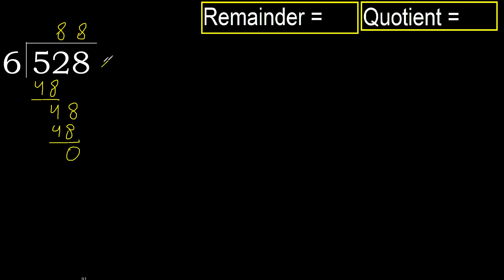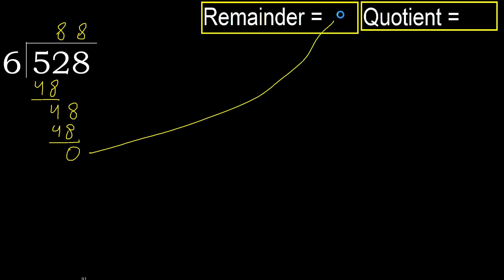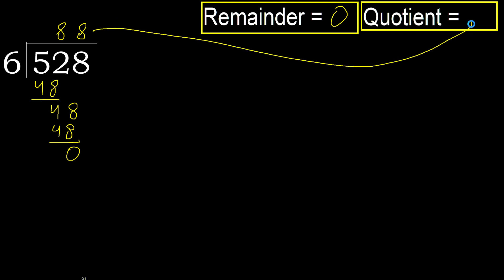Next — that is not a number, therefore finish it. 528 divided by 6 is 88.